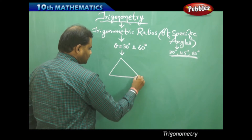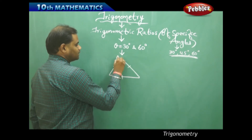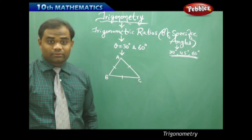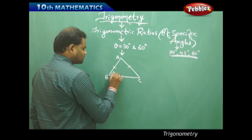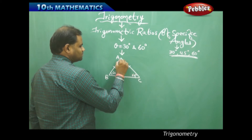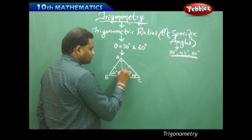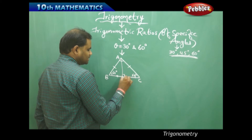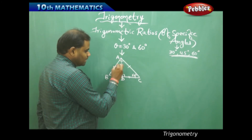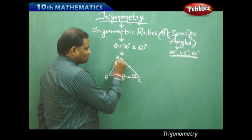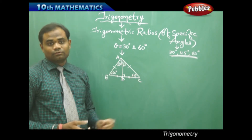An equilateral triangle has all sides equal, so in equilateral triangle ABC, each angle is 60° since 60 + 60 + 60 = 180°. If we drop a perpendicular from A onto BC at point D, then D bisects BC and AD is the angular bisector of angle BAC. Since AD bisects the 60° angle equally, we get 30° and 30° on each side.